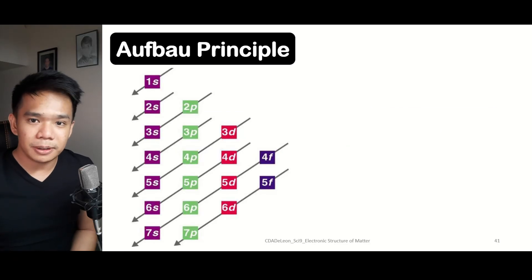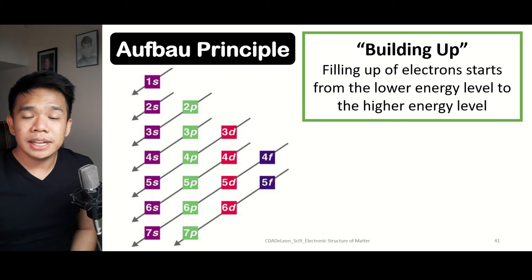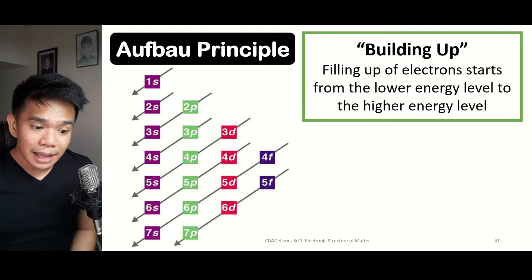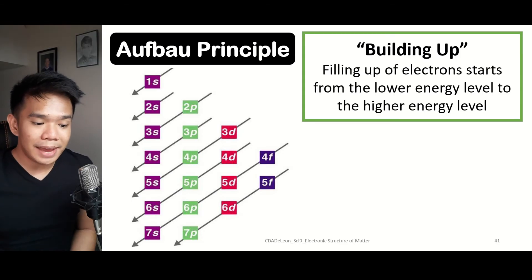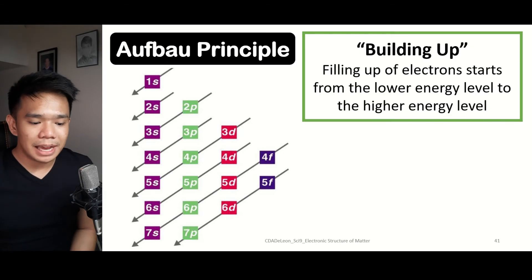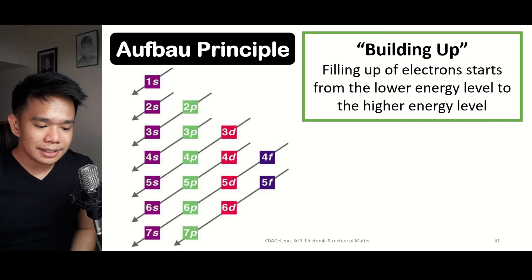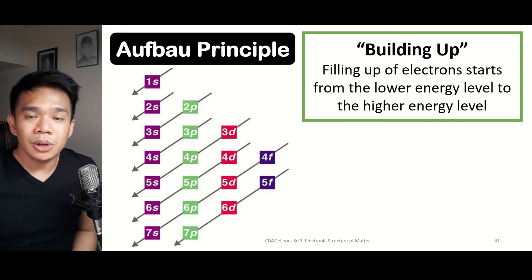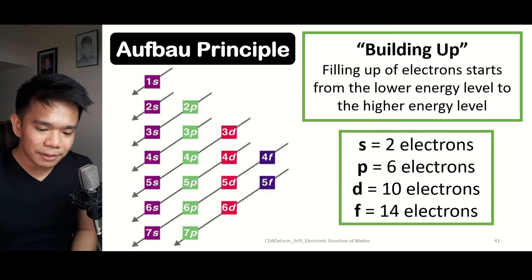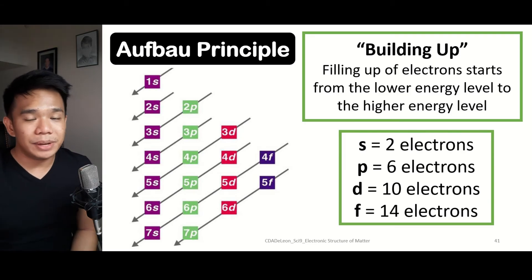Let us begin with the Aufbau principle. The term Aufbau means 'building up,' in which electrons are filled from the lowest energy level to the highest. Within the first energy level, the possible sublevel is S. For the second, we have S and P. For the third, S, P, and D. For the fourth and fifth, S, P, D, and F. For the sixth, S, P, and D; and for the seventh, S and P. The S sublevel holds 2 electrons, P holds 6, D holds 10, and F holds 14 electrons.